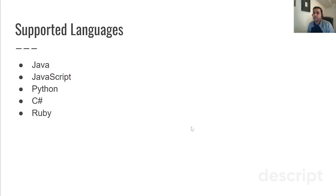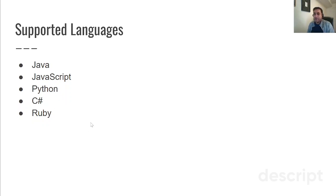Since Appium is an extension of Selenium, similar to how Selenium supports multiple languages, Appium also supports multiple languages — Java, Python, C#, and Ruby. You can use any one of these languages to write your scripts and do your automation in Appium. That's another reason it's very popular — it's not only cross-platform, it also gives you the freedom to choose from multiple programming languages.